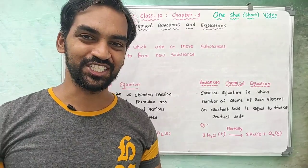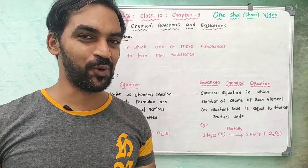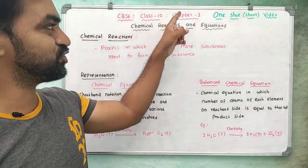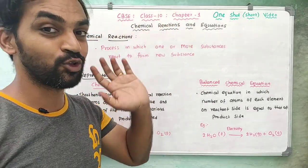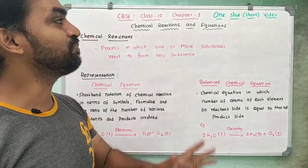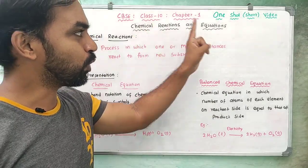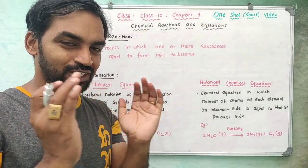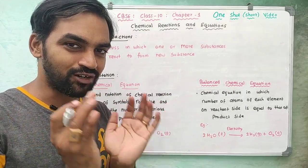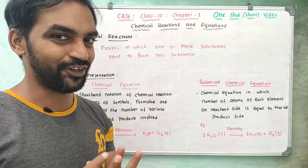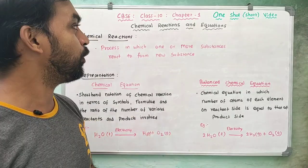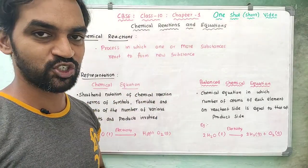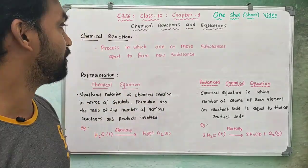Hi friends, welcome to Biology Simplified Tamil. I am Siddhin Nathana. CBSE Class 10 Chapter 1, that is Chemistry. We have a short one-shot video. So, Chemical Reactions and Equations, that is the chapter.